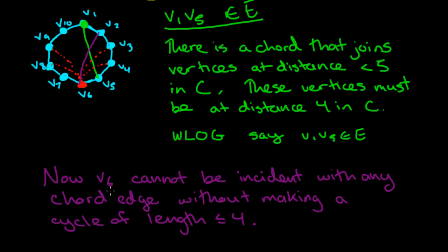So we know that V6 cannot be incident with any chord edge without making a cycle of length less than or equal to 4. And that right there is a contradiction because we know we cannot have cycles of length less than or equal to 4 and also we know that vertex V6 in particular has to have degree 3 like all the other vertices. So that completes the proof.